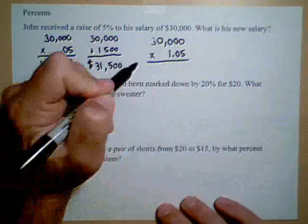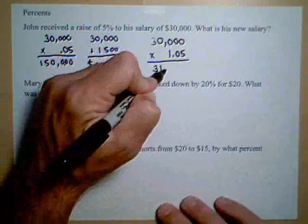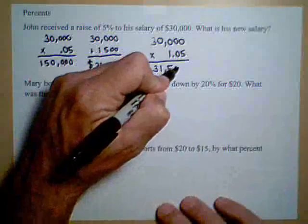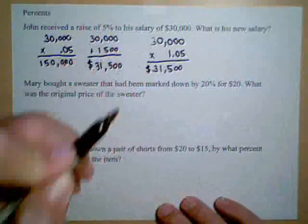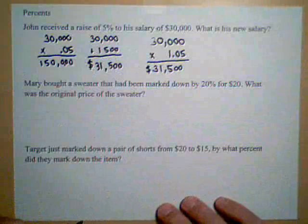If you do this multiplication, you're going to see that you get the same answer we had before, $31,500. And there's John's new salary.